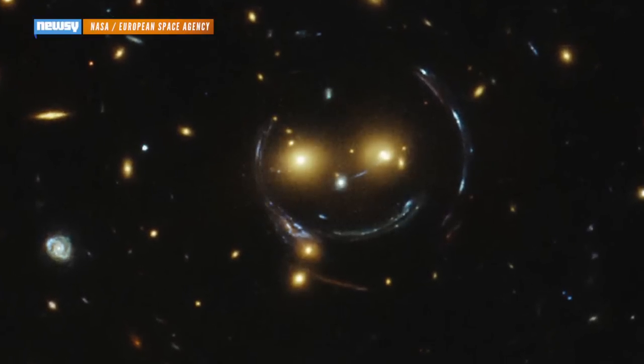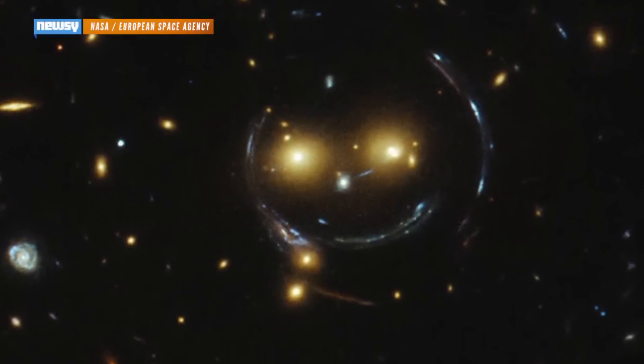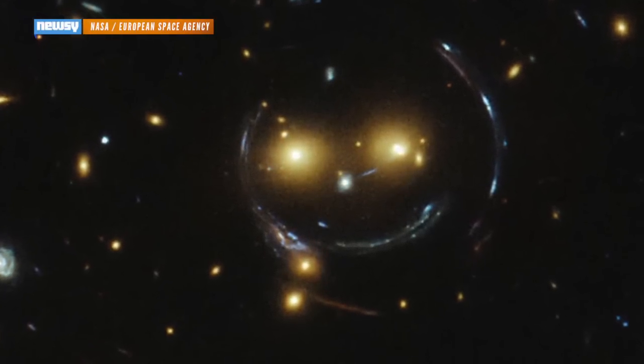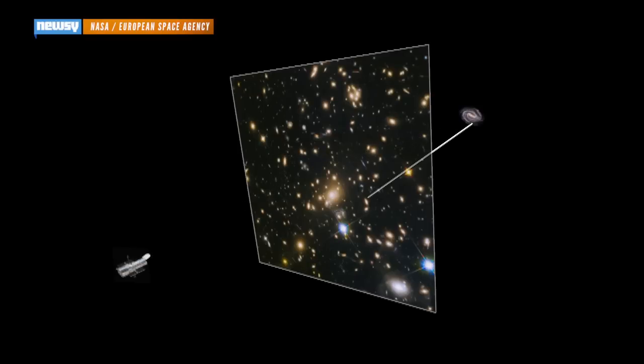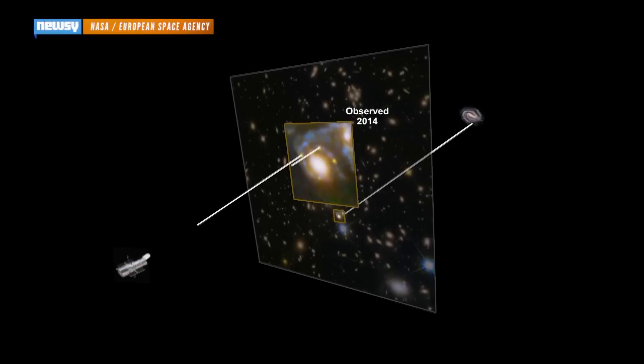It's called gravitational lensing, and it's a common trick of the light that shows up in tons of deep space images. In this case, light from a distant supernova was warped on its way to Earth when it passed through a galaxy cluster, splitting the image into four.